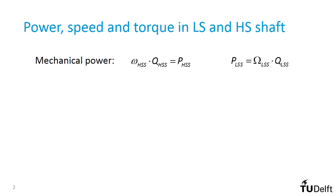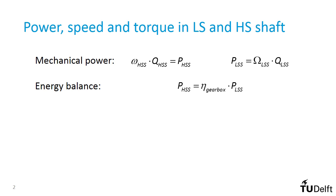As you have seen before, the mechanical power can be expressed as rotational speed times torque. When we relate the power in the high-speed shaft to the power in the low-speed shaft, we have to consider the efficiency of the gearbox.